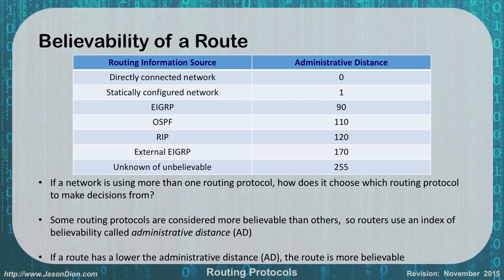If you have a static route configured and the router it points to goes down, traffic will still try to go to that downed router. Whereas if you were using OSPF, it would recognize the route went down and find an alternate path. Some routing protocols are considered more believable than others — the lower the administrative distance, the more believable it is. If a route has a lower administrative distance, it wins.